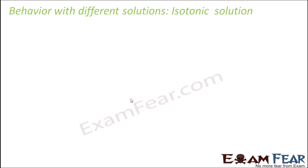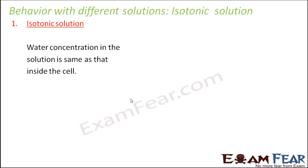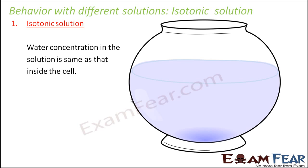Now the third type is the isotonic solution. 'Iso' means same, so here the concentration of water in the solution and in the cell will be the same. In this type of solution, since the water concentration in the solution is same as that inside the cell, we do not see a net movement or net diffusion. It is like a combination of both hypertonic and hypotonic — water wants to move inside and exerts turgid pressure, while water also moves outside, and both movements get balanced. Therefore, there is no net movement taking place in an isotonic solution.